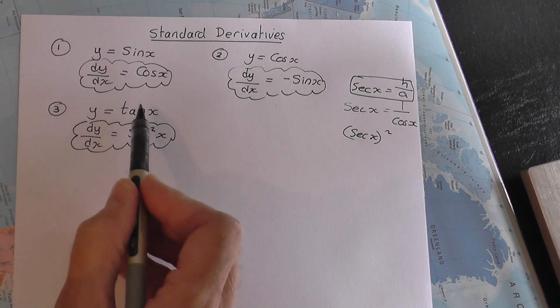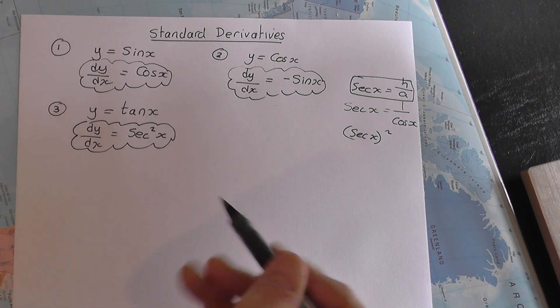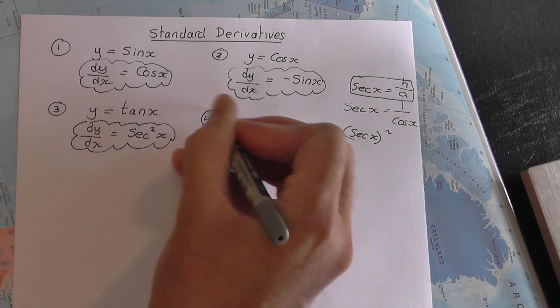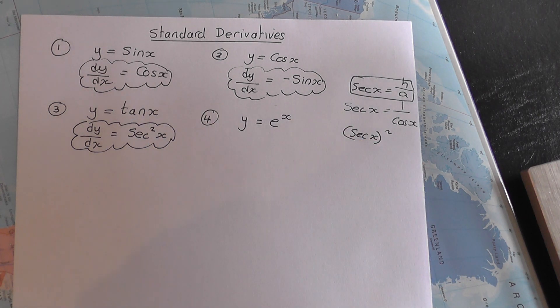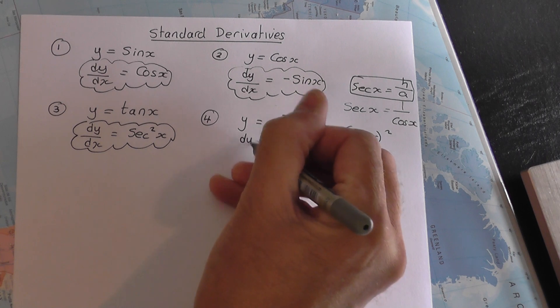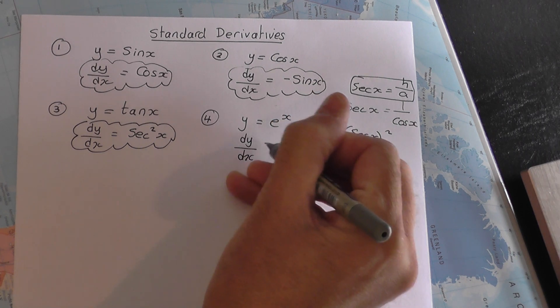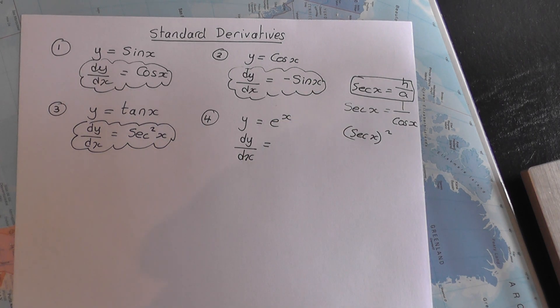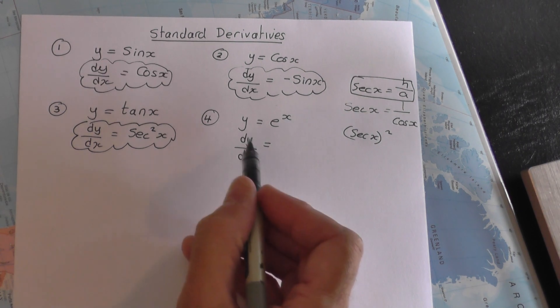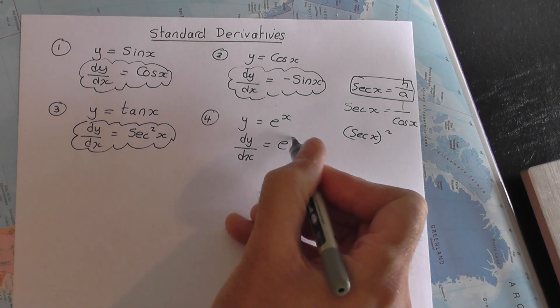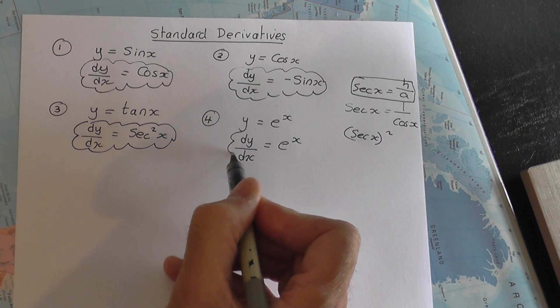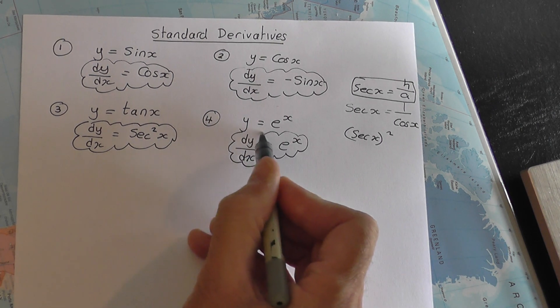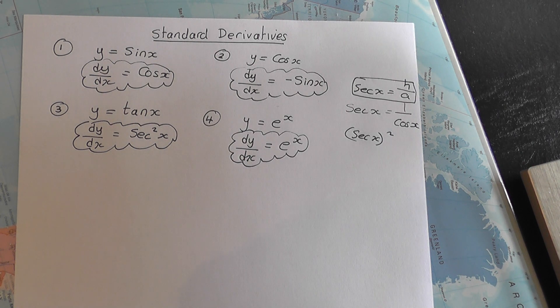The fourth thing you need to know as a standard result is the exponential function y equals e to the x. Really easy one here. Again, it can be proven from first principles, but you don't need to know this proof off by heart. You need to simply learn that it stays exactly the same. Well, that wasn't very difficult. So dy by dx equals e to the x. That's a standard result you need to learn.